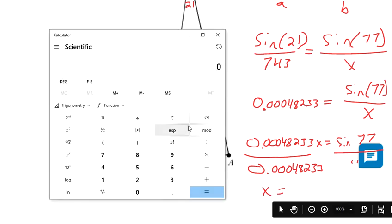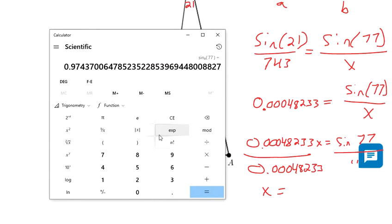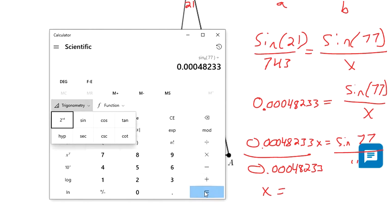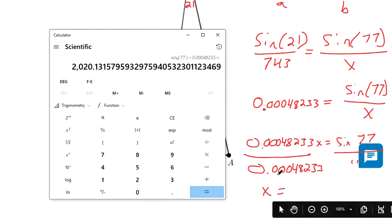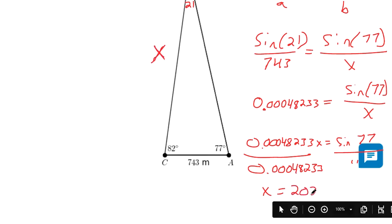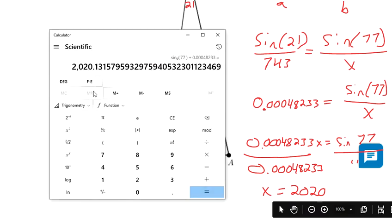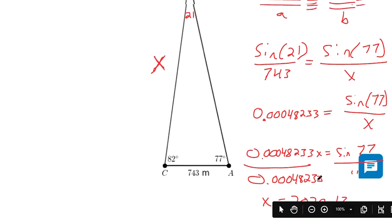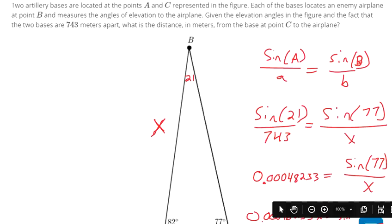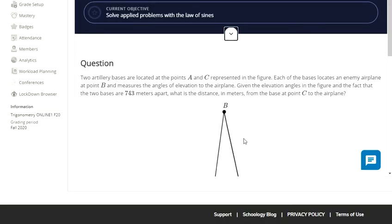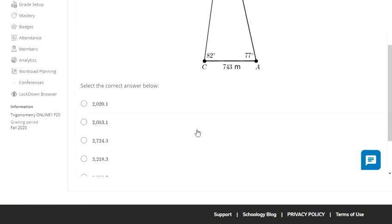So what I'm going to do in my calculator is figure out what sine of 77 is and divide it by 0.00048233. So that's 2020, I don't know, what is Newton coming around. 2020.13. 2020 point, I mean that's closest.